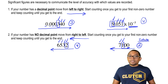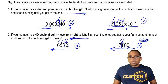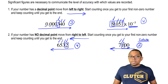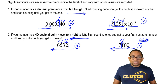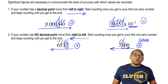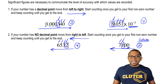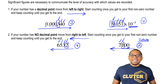When it comes to significant figures, that's all you have to do. Learn if you have a decimal point or no decimal point — that determines which direction you start moving. Only start counting once you get to your first non-zero number in both situations, and then count all the way until the end.